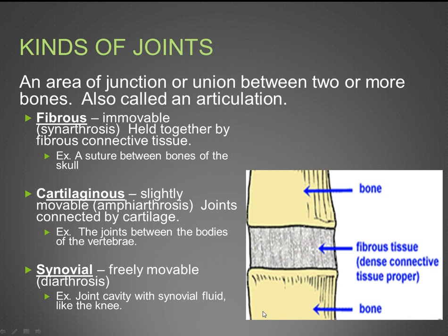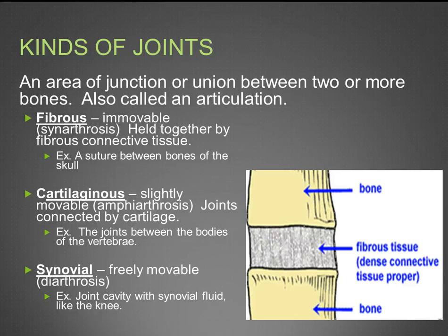Next is cartilaginous, which is slightly movable or amphiarthrosis. These are joints connected by cartilage — for example, the joints between bodies of the vertebrae, as shown in the picture. Next is synovial, or freely movable, also called diarthrosis — 'dia' meaning through, 'arthro' meaning joint, 'osis' meaning condition. For example, the knee joint, which has a joint cavity with synovial fluid.